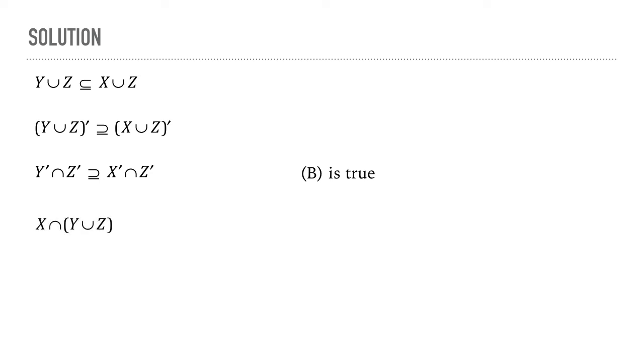Consider now the intersection of X and Y union Z. Now, this can be written down in this form using the distributive property. Now, we also know that Y is a subset of X which means X intersect Y can be written simply as Y and therefore, we get this and this implies that option C is also true.